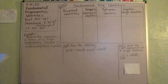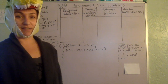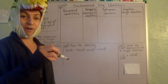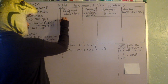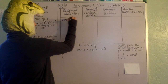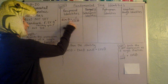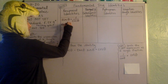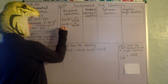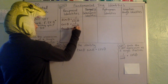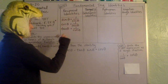Let me start with the reciprocal identities. You can print the guided note sheet and fill it out as I go, or have it in Notability and pause and go back and forth. There are six reciprocal identities — hopefully you'll recall a couple from Algebra 2 — that sine is one over cosecant, cosine is the reciprocal of secant, and tangent is the reciprocal of cotangent.